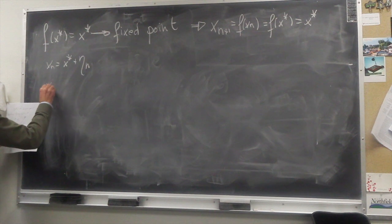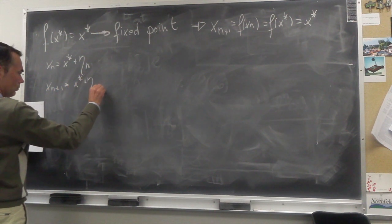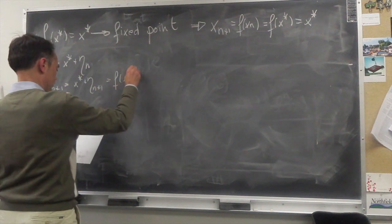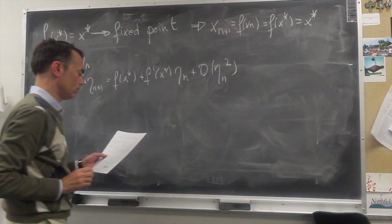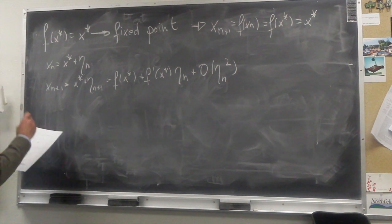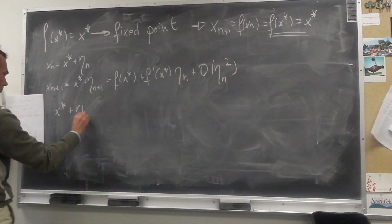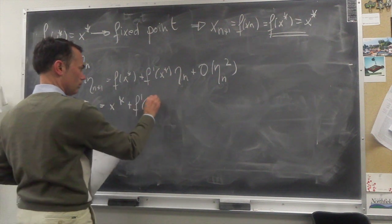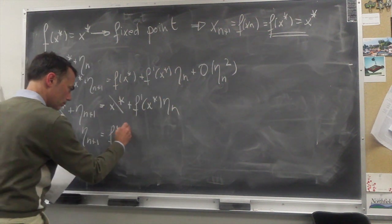We can write x sub n plus 1 as x star plus the n plus 1 distance eta. Because eta is small, because we are in a nearby trajectory, we can expand it in Taylor and neglect the terms of second order or larger. But since f of x star is x star, we get that eta sub n plus 1 is the derivative f prime at x star times eta sub n.